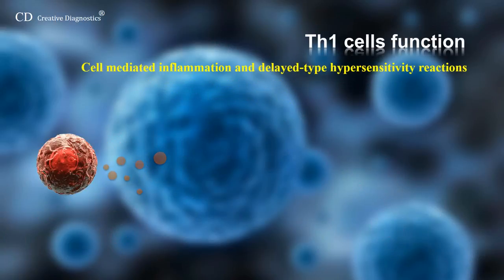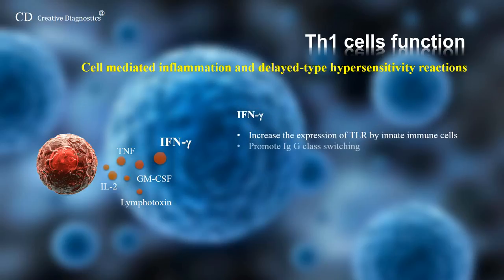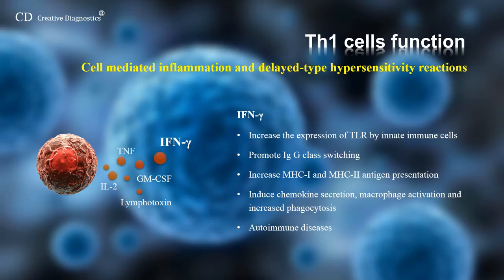TH1 cells are the quintessential cell type involved in cell-mediated inflammation and delayed type hypersensitivity reactions. They are most often defined by their production of interleukin-2 and interferon-gamma, but have been reported to produce a number of cytokines, including tumor necrosis factor, lymphotoxin, and granulocyte macrophage colony stimulating factor. The signature cytokine of the TH1 subset, interferon-gamma, is a potent pro-inflammatory cytokine, which has a number of important roles, including increasing the expression of toll-like receptors by innate immune cells, promoting IgG class switching, increasing MHC1 and 2 antigen presentation, induction of chemokine secretion, macrophage activation and increased phagocytosis, and is involved in several autoimmune diseases.